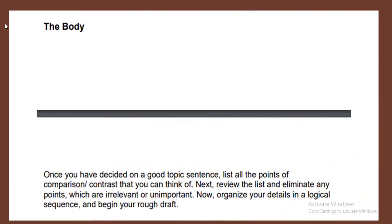Once you have decided on a good topic sentence, list all the points of comparison or contrast that you can think of. Next, review the list and eliminate any points which are irrelevant or unimportant. Now organize your details in a logical sequence and begin your rough draft.